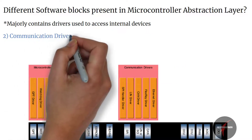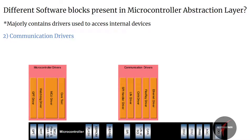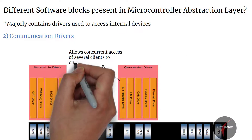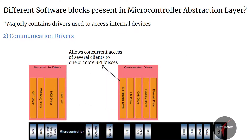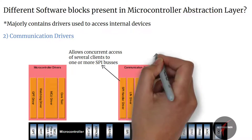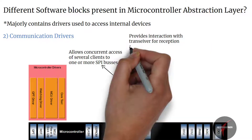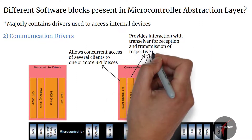Communication drivers contain drivers for ECU onboard communication like SPI and vehicle communication such as CAN, LIN, etc. The SPI handler driver allows concurrent access of several clients to one or more SPI buses. The handler performs buffering, queuing, arbitration, and multiplexing. LIN, CAN, FlexRay, and Ethernet drivers provide interaction with the transceiver for reception and transmission of their respective protocols.